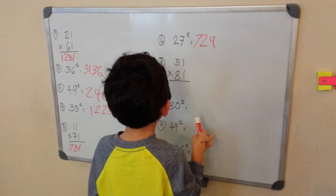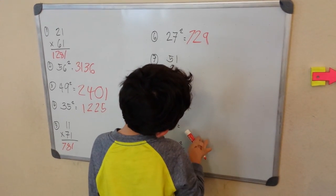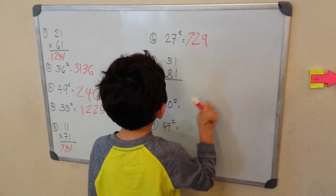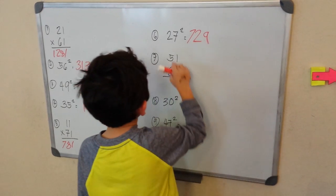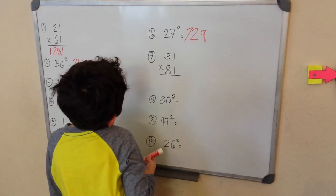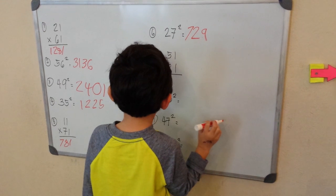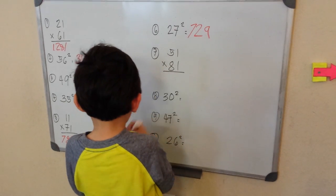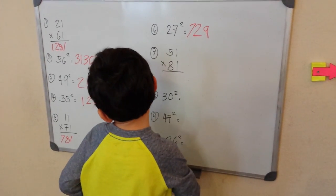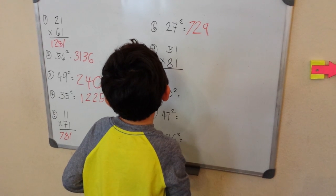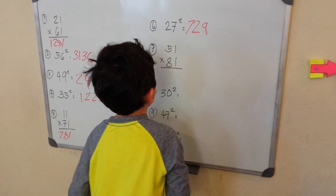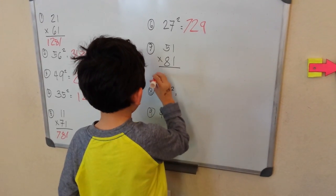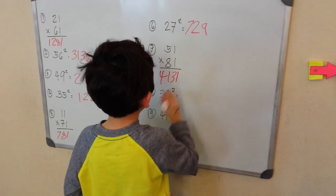51 times 81. 5 times 8 is 40. 400. 5 plus 8 is 13. 400 plus 13 is 413. 4,131.